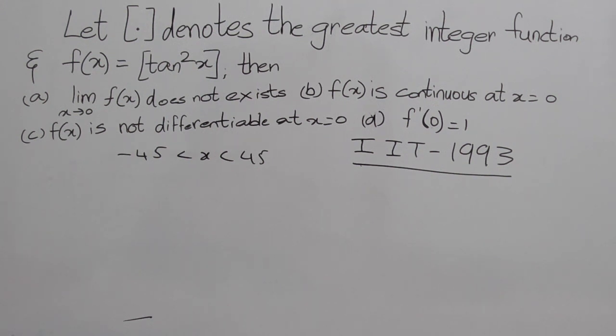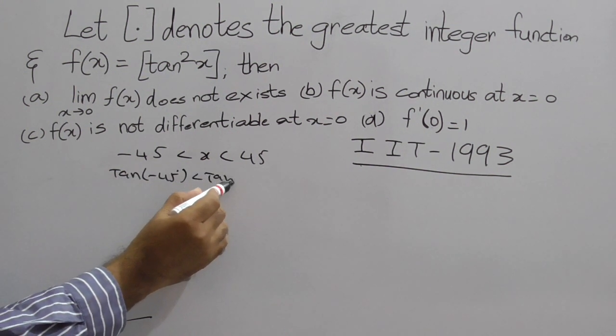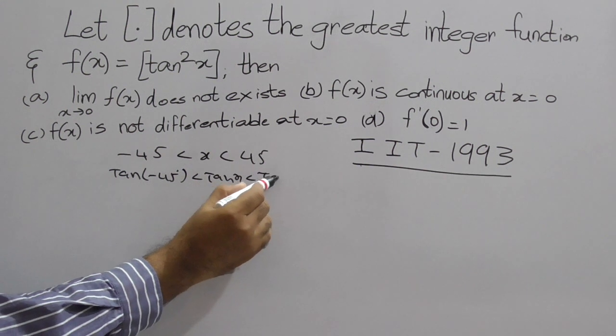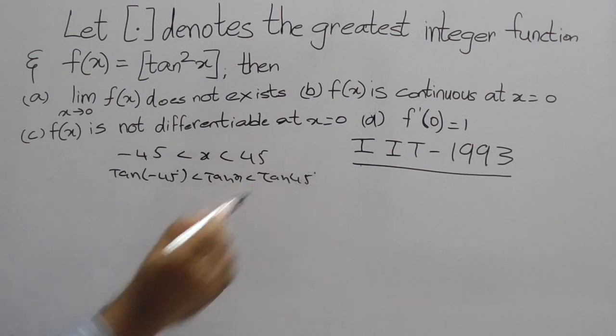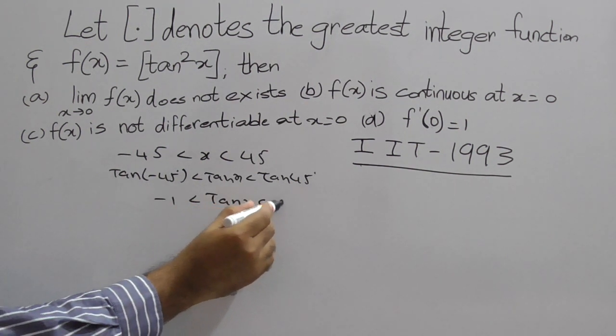Right. So now, apply tan on both sides. tan(-45°) < tan x < tan(45°). Now, this is -1 < tan x < 1.